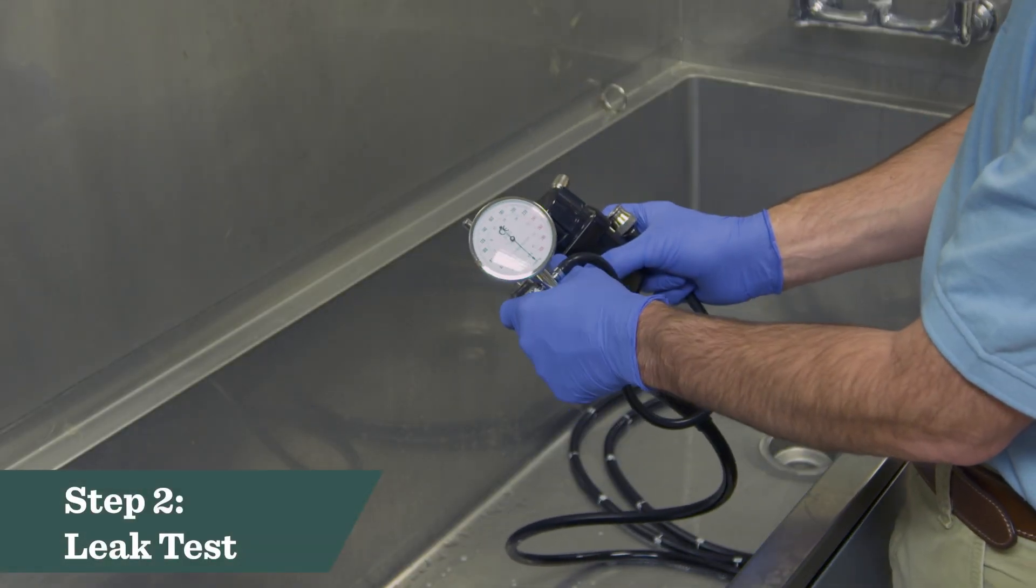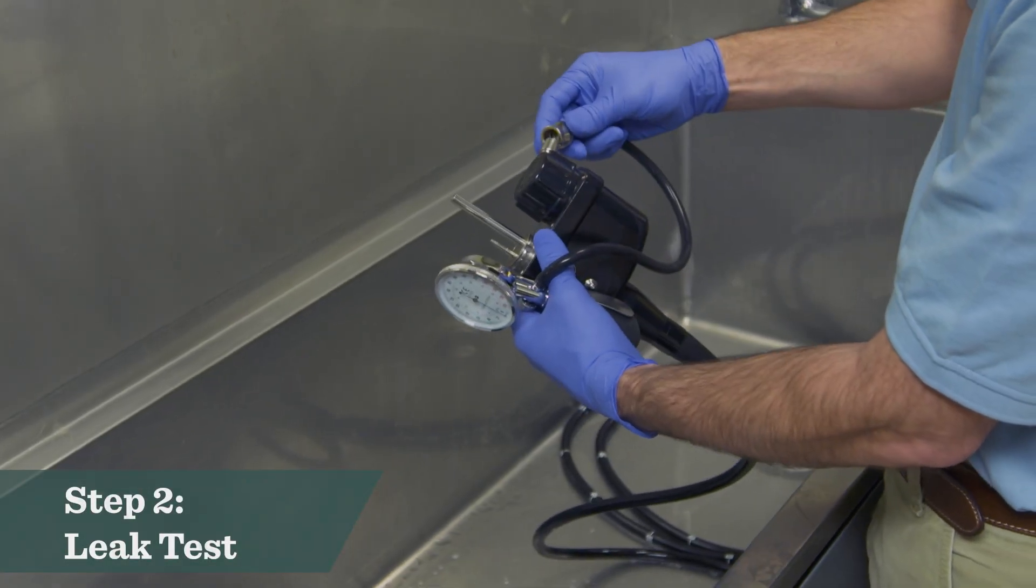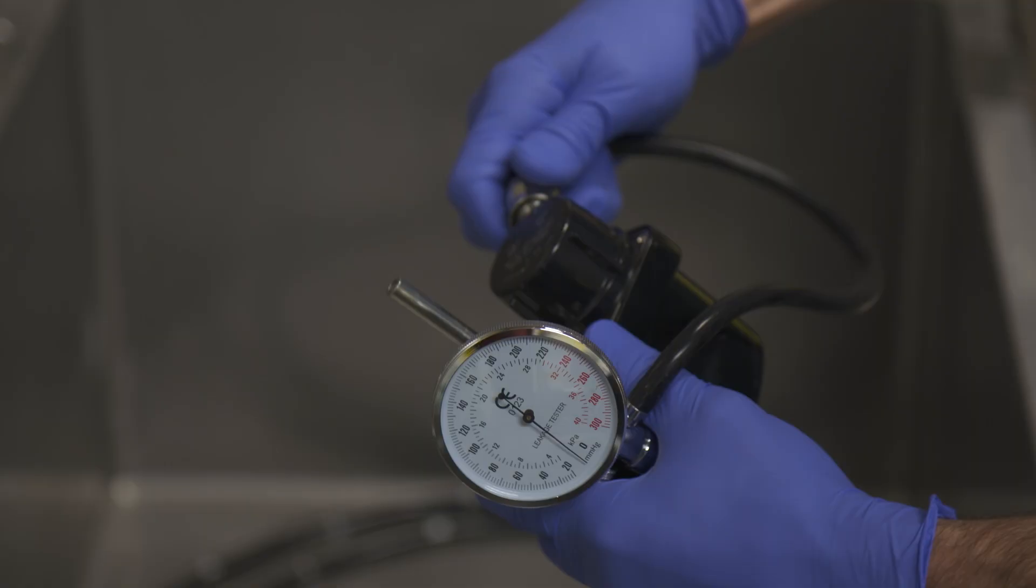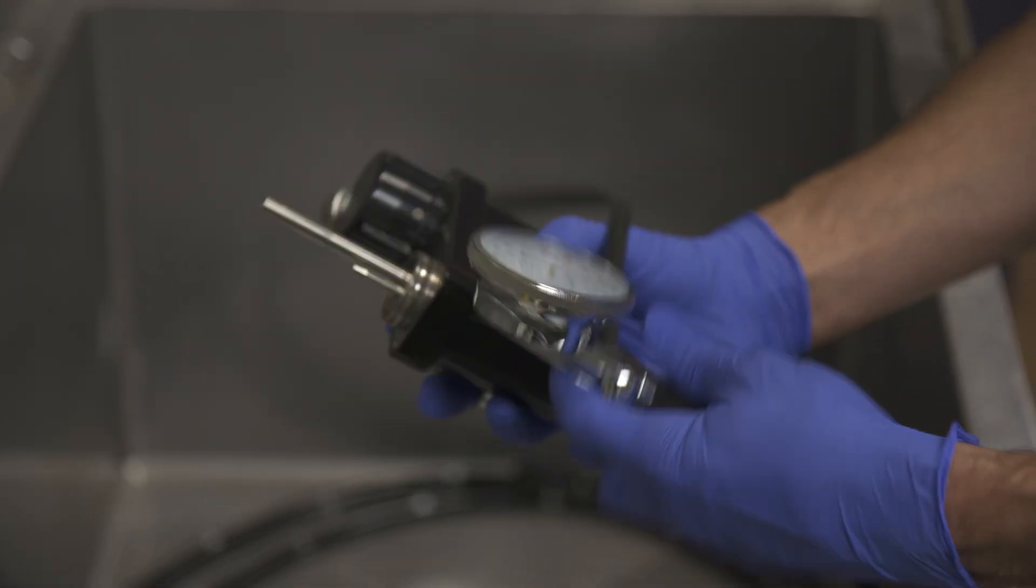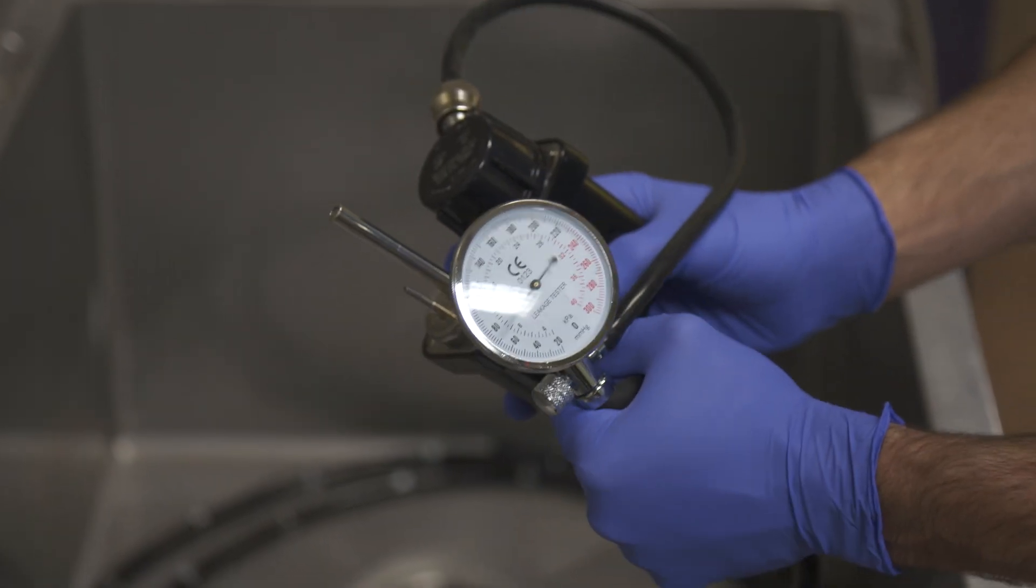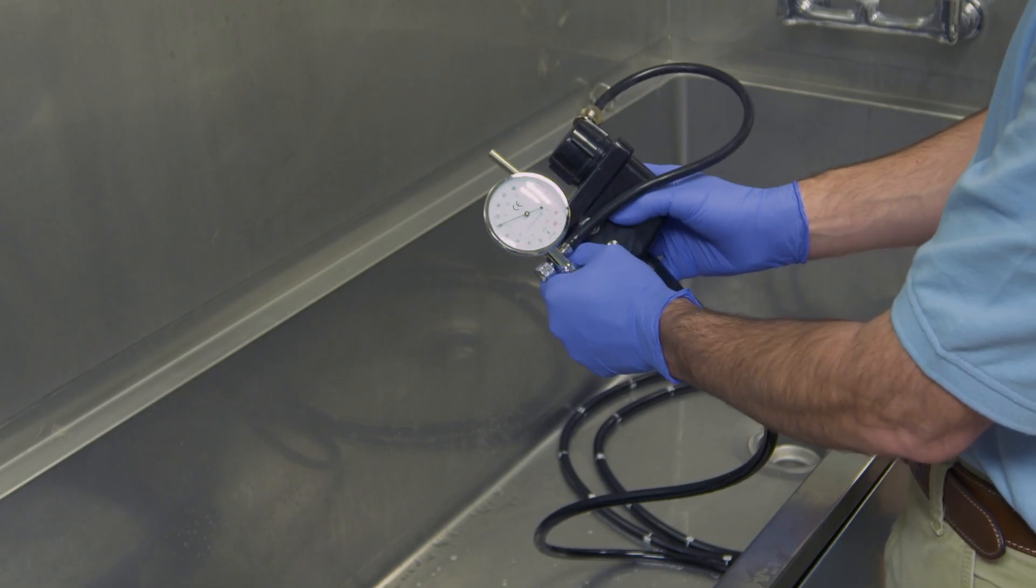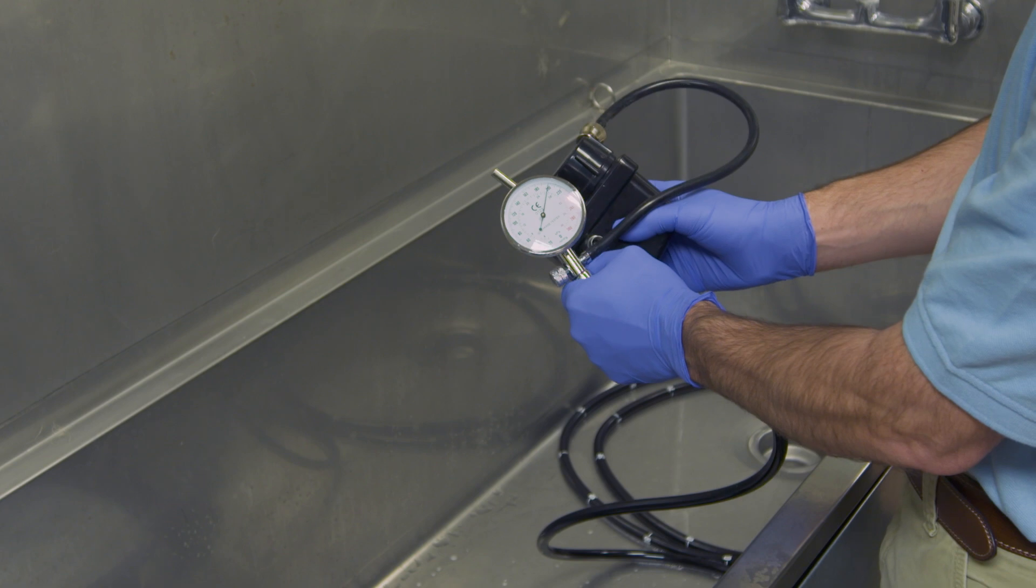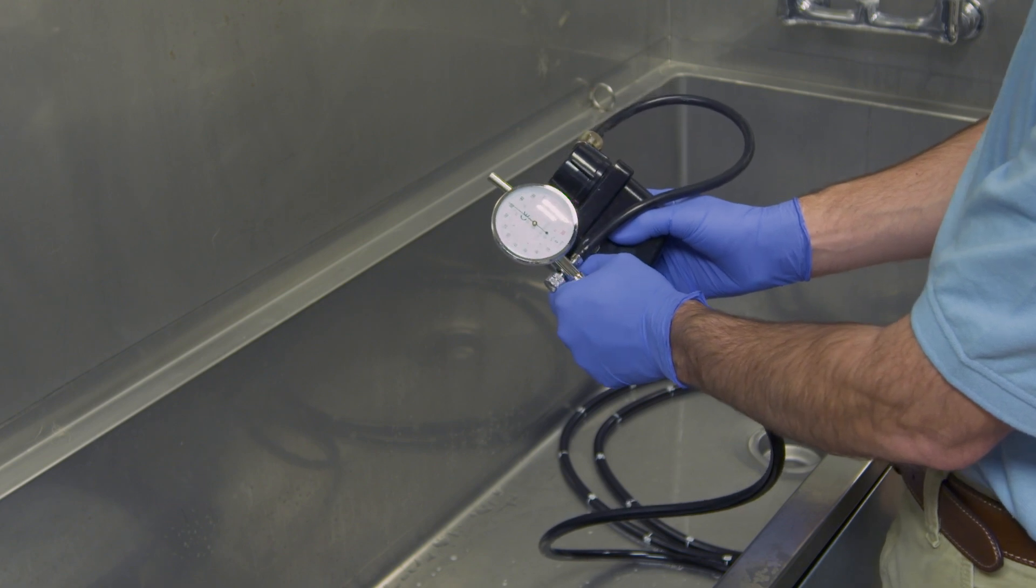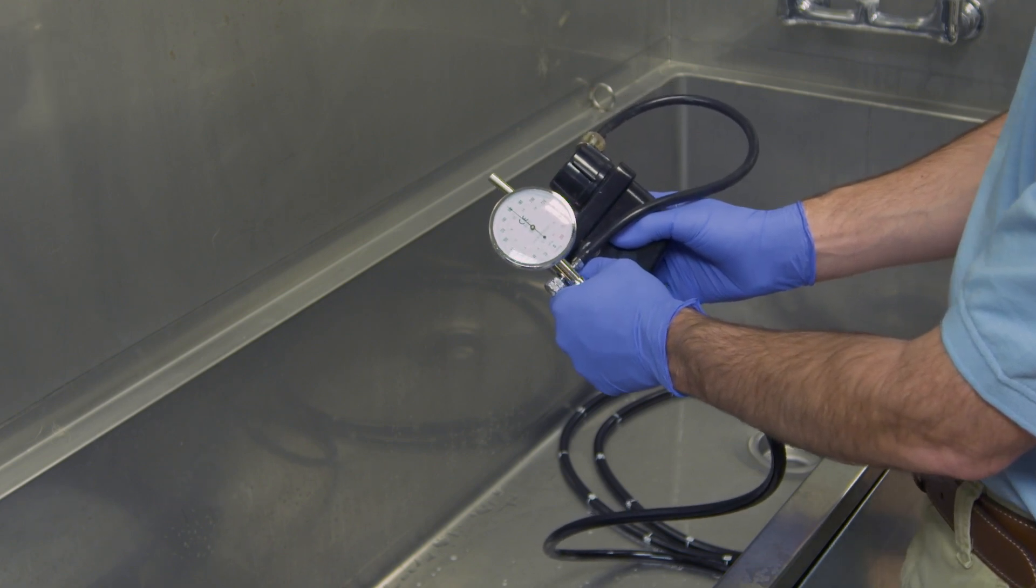The second step in the process is to make sure there are no leaks. Attach the video connector watertight cap and the leak tester, a pressurized manometer to the system. Pressurize the system to 160 to 180 millimeters of mercury as recommended for your system and make sure it does not decrease 10 millimeters of mercury over 30 seconds.